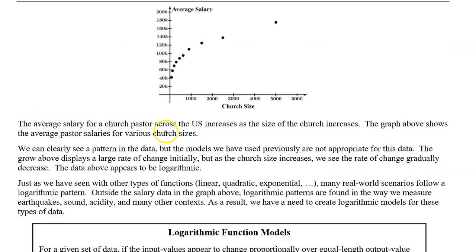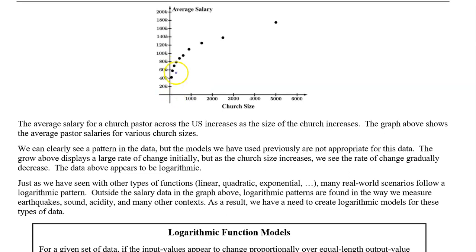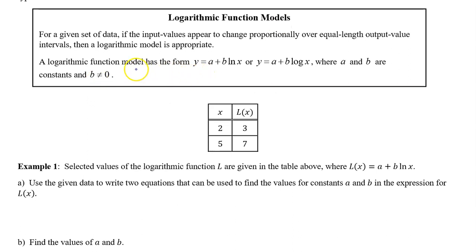The average salary for a church pastor across the U.S. increases as the size of the church increases. The graph above shows the average pastor salaries for various church sizes. We know that logarithmic parent functions look like this, so it seems like a logarithmic function would be a good fit for this data. A logarithmic function model has the form y equals a plus b times the natural log of x, or y equals a plus b times the log of x, where a and b are constants and b cannot equal zero.